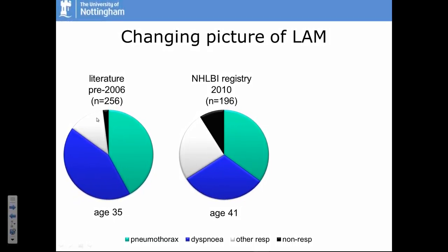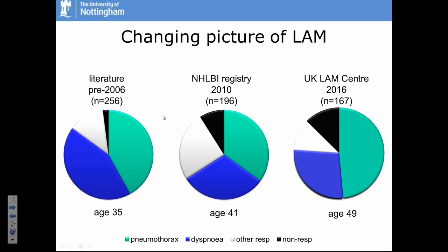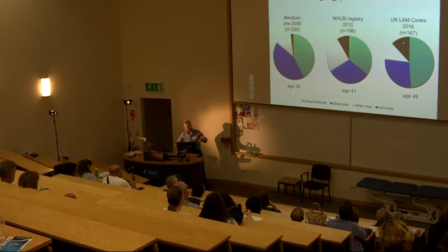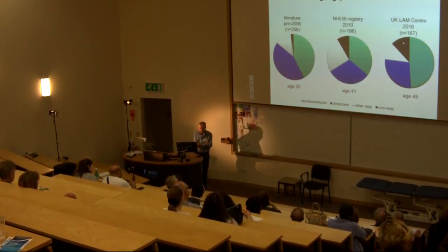Moving forward to about 2010, when a big registry of LAM patients was produced in the States, you notice the average age of patient presentation — which was 35 — has gone up. This means we're recognising that LAM isn't just a disease of very young women; it does affect older people too. More people are being diagnosed with non-classical presentations. Looking at all the people we see at the LAM Centre in Nottingham, the age of presentation has gone up again. What we understand of the disease is evolving — the old books say just young women with pneumothorax, but we're identifying many older people with less obvious symptoms nowadays.